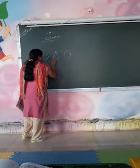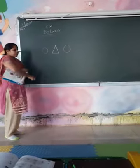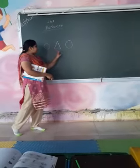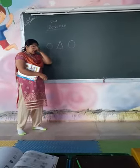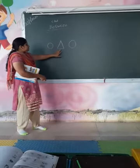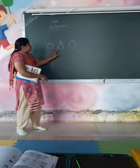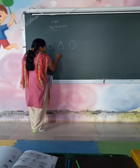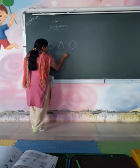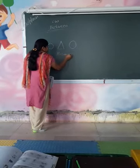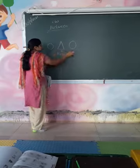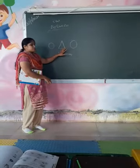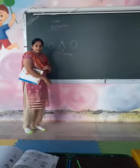Now tell me, where is the triangle? I have three shapes here: circle, triangle, and circle. So where is the triangle? Triangle is between two circles. Triangle is between two circles — the triangle is between the circles.